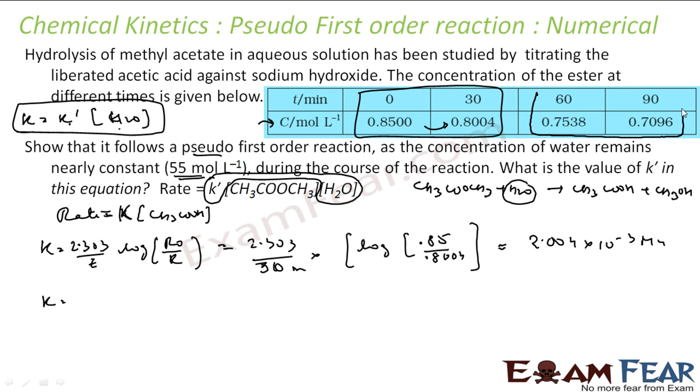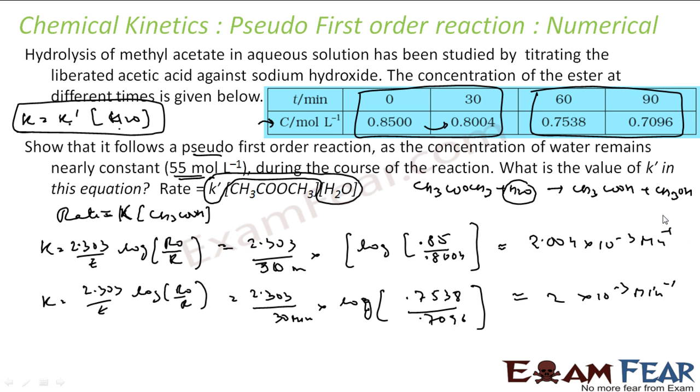Let's try to find again the value of K from a different set. Let's take this set. 2.303 by t log of r naught by r. 2.303 by t is again 30, 90 minus 60 is 30 minutes. Log of r naught, initial concentration here is 0.7538, final is 0.7096. You solve this, you get almost same value. Since I'm getting same value in this equation, that means this proves it is a pseudo first-order reaction.